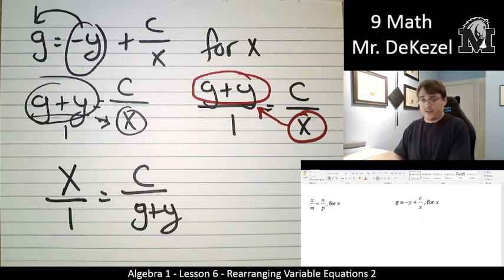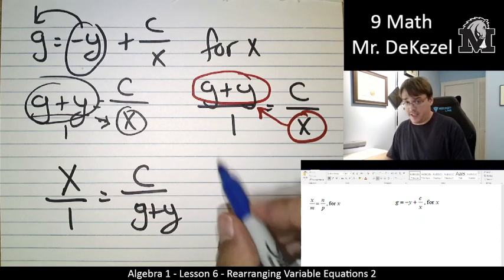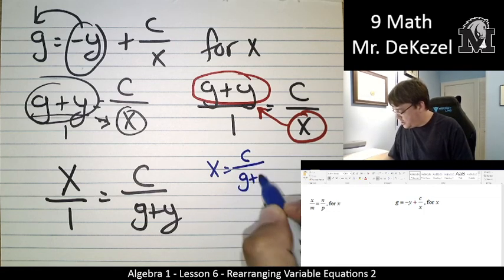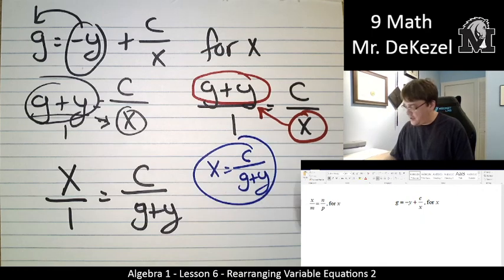So our final answer, I'll write it in blue, maybe that'll be different. x is equal to c divided by g plus y is our final answer.